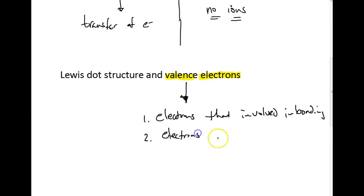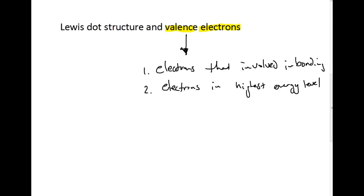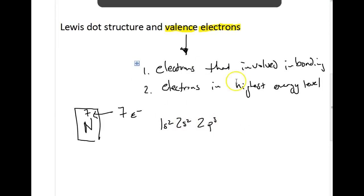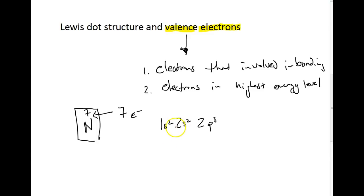Valence electrons are also electrons in the highest energy level. There are two ways to determine how many valence electrons an atom has. Let's take the example of nitrogen. Nitrogen has seven electrons — an atomic number of seven. If we write the electron configuration of nitrogen, we start with 1s2, then 2s2, then 2p3. That gives 2 + 2 + 3 = 7, which matches. The electrons in the highest energy level — the 2s2 and 2p3 — are the valence electrons. So we would say that nitrogen has five valence electrons.